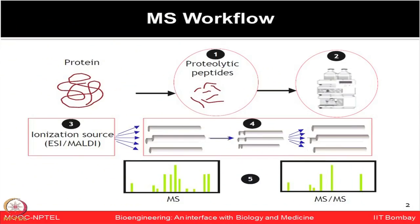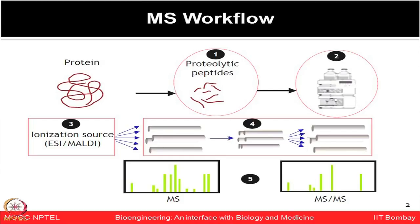In a mass spectrometry-based proteomics workflow, first we start with a protein of interest which we want to analyze — either a purified protein or a spot excised from a 2D gel or an SDS-PAGE band — and we want to know its identity. Initially we have the intact protein which we digest using enzymes like trypsin, chymotrypsin, Lys-C, etc., generating proteolytic peptides.